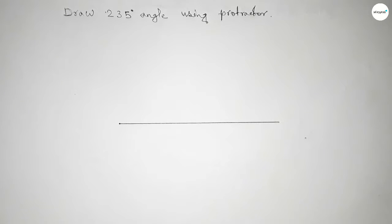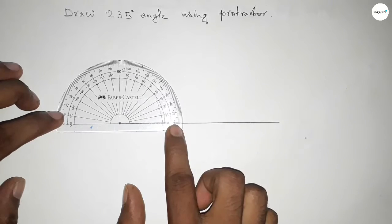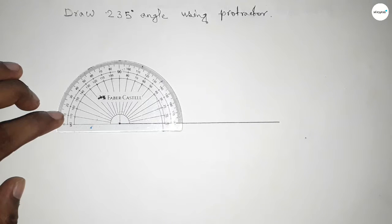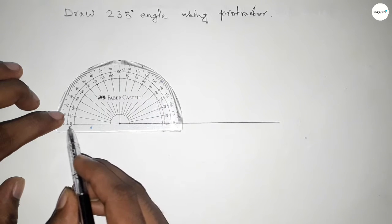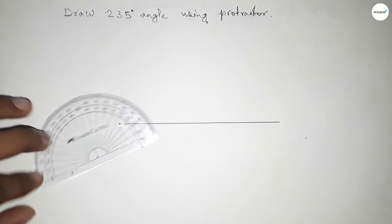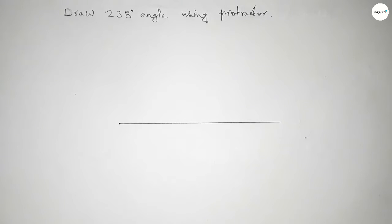Now putting the protractor on the line perfectly. Then counting the angle. So from this to up to this, this is 180 degrees. But we have to draw 235 degree angle.